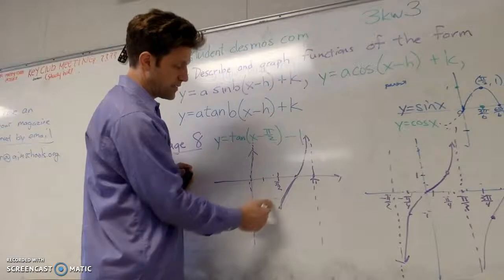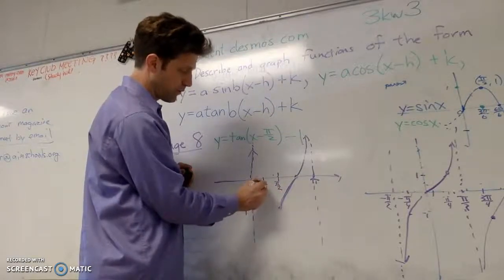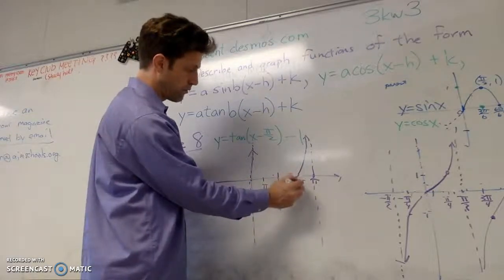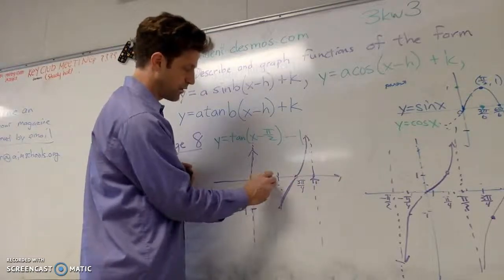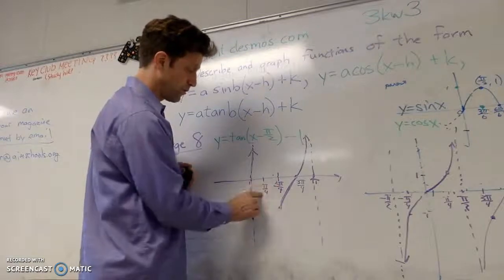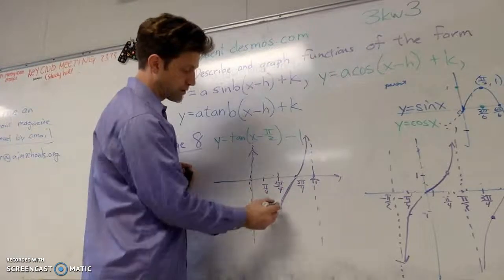Because pi over 4 less than pi over 2 is pi over 4. Pi over 4 more than pi over 2 is 3 pi over 4. And why is that? Because pi over 2 is equal to 2 pi over 4. So pi over 4 less, pi over 4, pi over 4 more is 3 pi over 4. We're just speaking in fractions.